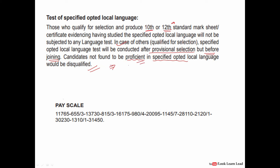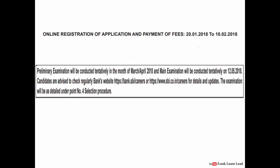The pay scale is around 31,450, which is very good. Online registration started from 20th January 2018 and goes till 10th February 2018, so there is still time to apply. The preliminary exam will be in March or April 2018 (tentative), and the main exam will be on 12th May 2018. You have around two months to prepare for prelims.